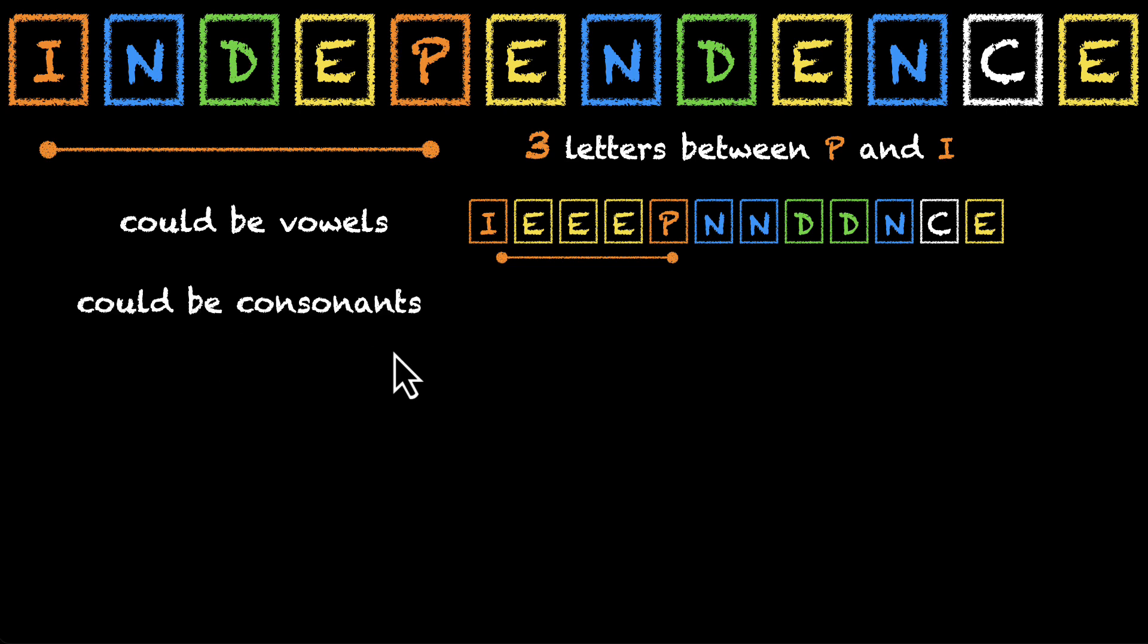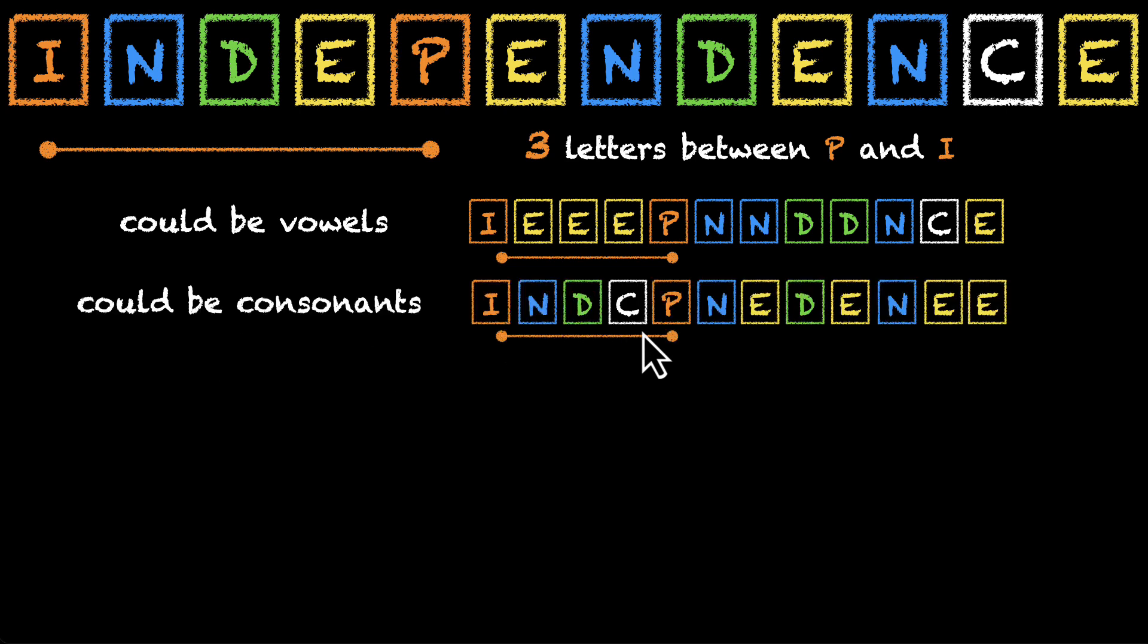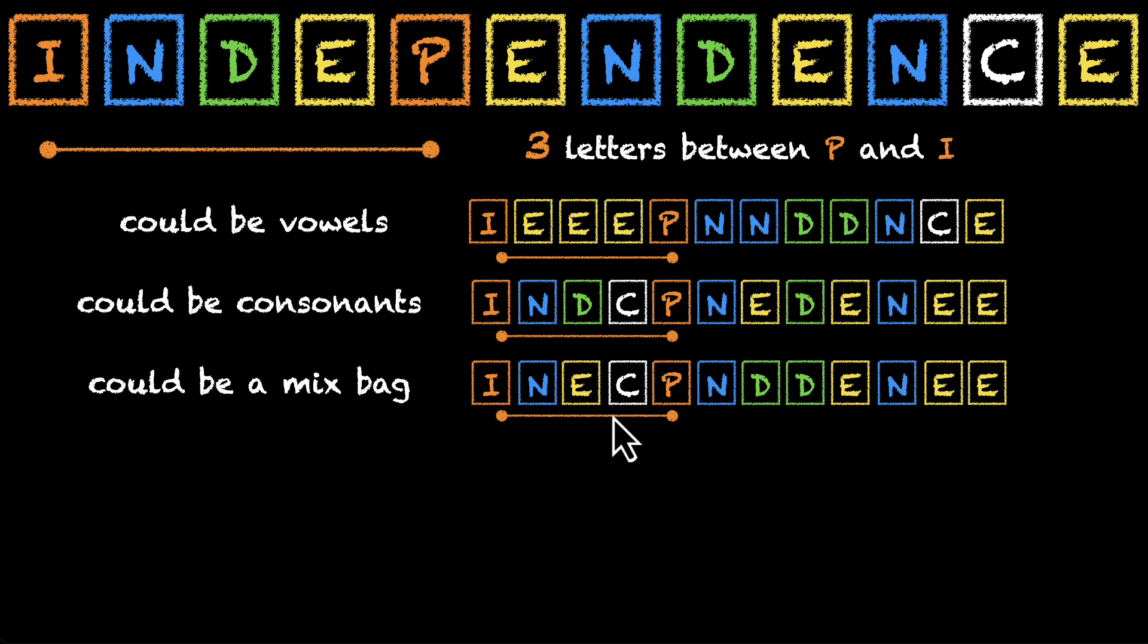They could also all be consonants. We can have something like this as well, where all three of them are consonants. They could be a mixed bag. They could be vowels and consonants between I and P. This is how it looks like, one of the examples.